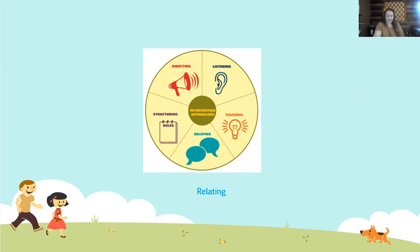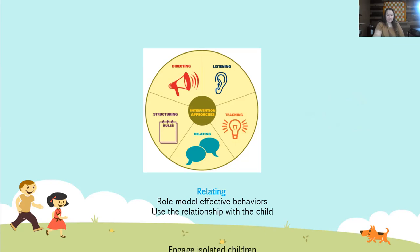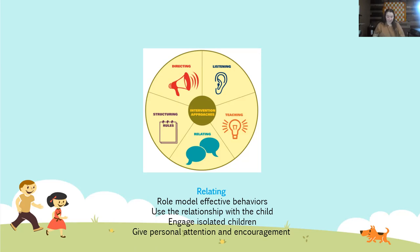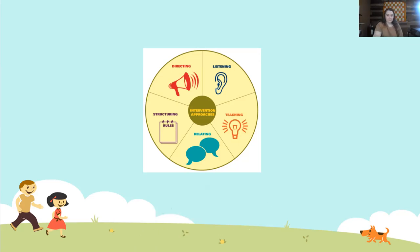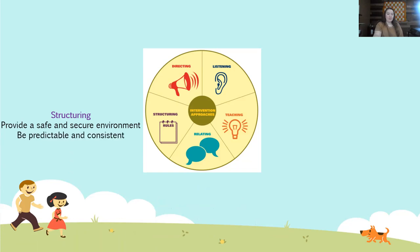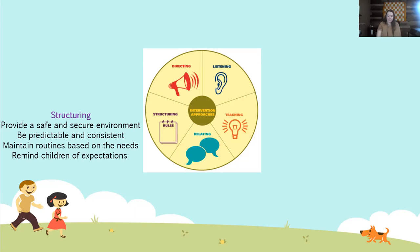The next approach is relating. Role model effective behaviors, use the relationship with the child, engage isolated children, and give personal attention and encouragement. We depend on the strength of our relationship to influence the child when using the relating approach — so it may not be the best approach for a child who was just placed in your home, because you ultimately don't have a relationship with that child yet. And then the last approach is structuring. Provide a safe and secure environment, be predictable and consistent, maintain routines based on the needs, and remind children of the expectations. We can prevent crisis by how we structure and use our environment by breaking down routines into small steps.